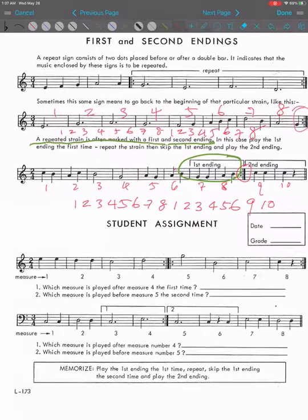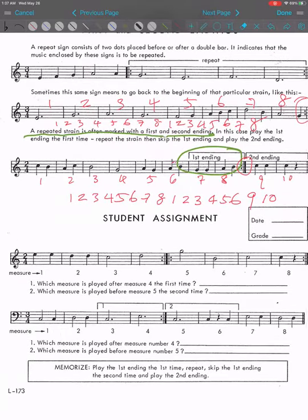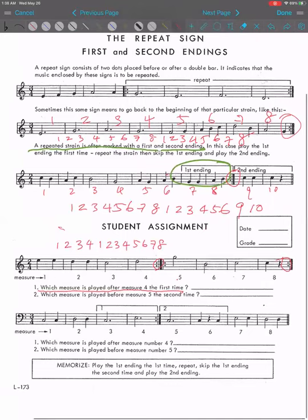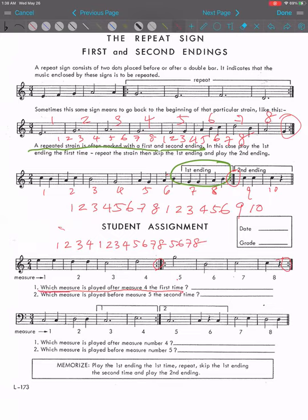Let's do some exercise here. Which measure is played after measure 4 the first time? So when you see questions like this, I usually write out a sequence of the order of measures that will be played. So I'm writing like 1, 2, 3, 4, repeat, 1, 2, 3, 4, and then go to 5, 6, 7, 8, and then repeat again in the end. So it's 5, 6, 7, 8. So when they ask which measure is played after measure 4 is played the first time, measure 4 is here as the first time. The measure played after will be measure 1.